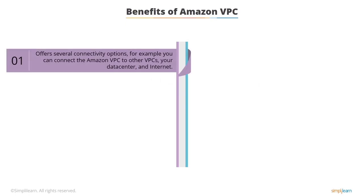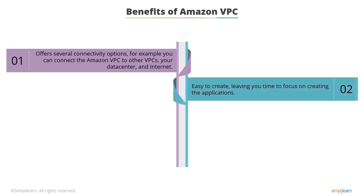For example, you can connect the Amazon VPC to other VPCs, your data center, and the internet based on the AWS resources you choose to make public or private. Second, it is easy to create an Amazon VPC in minutes using the AWS Management Console. While creating a VPC, AWS automatically assigns the security groups, IP ranges, subnets, and routing tables, so you can focus on creating the applications that will run in the VPC.